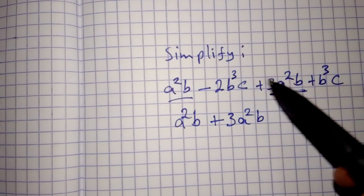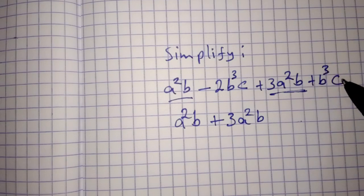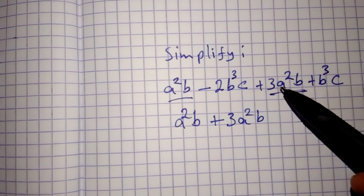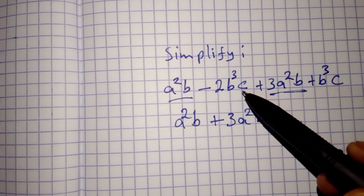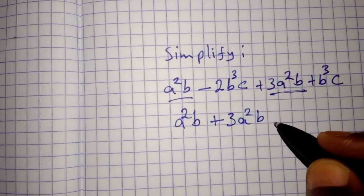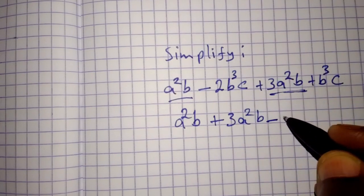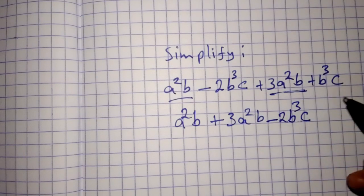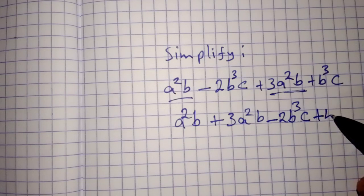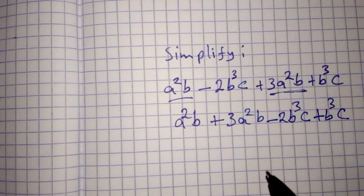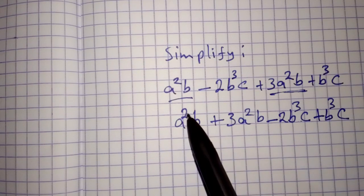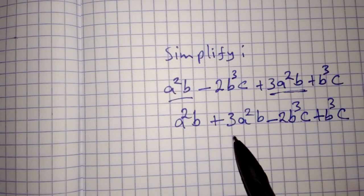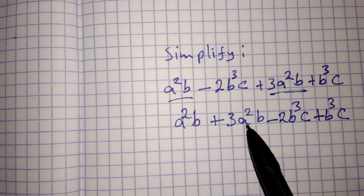b³c, b³c are like terms. So we also bring this and this one together. So it is minus 2b³c plus b³c. So a²b plus 3a²b.